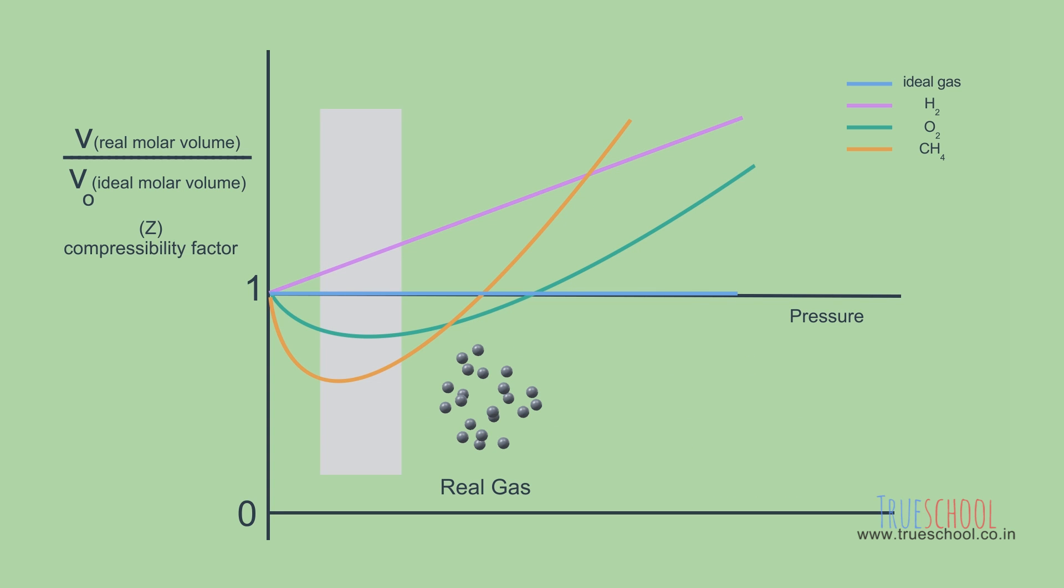Whereas at intermediate pressure attractive forces dominate for some gases. Hence 1 mole of the gas will occupy less volume than in ideal condition due to attraction. Hence here its compressibility factor will be less than 1.